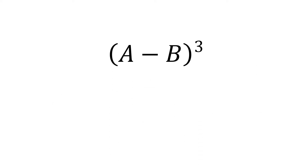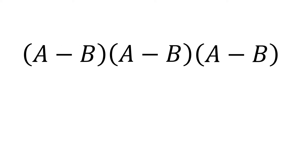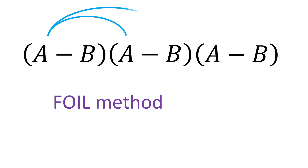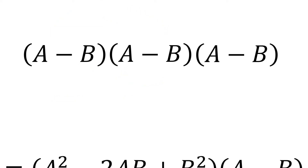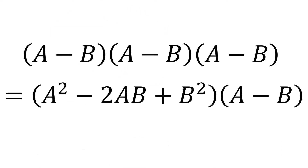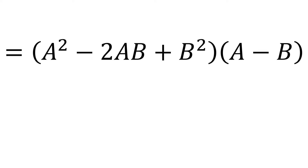Let's say we have (a minus b) cubed. This means a minus b, times a minus b, times a minus b. Now using the FOIL method, this is equal to (a squared minus 2ab plus b squared) times (a minus b).